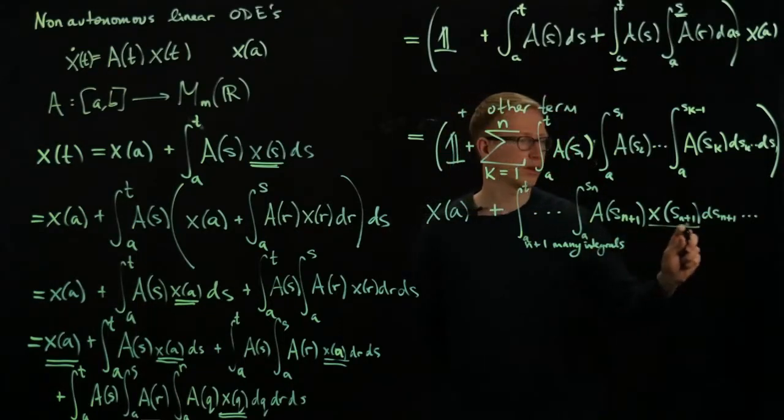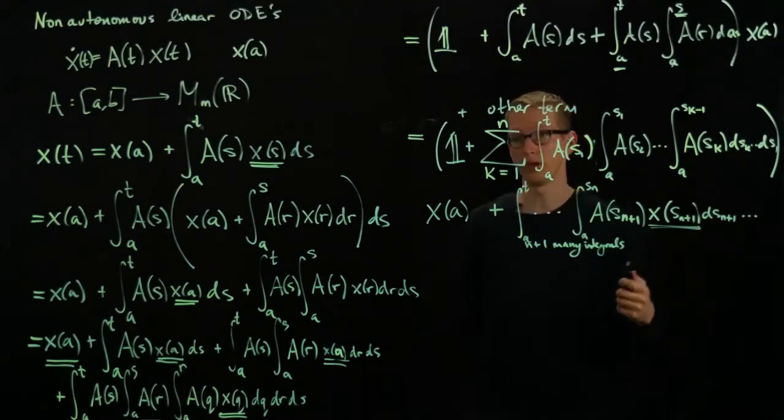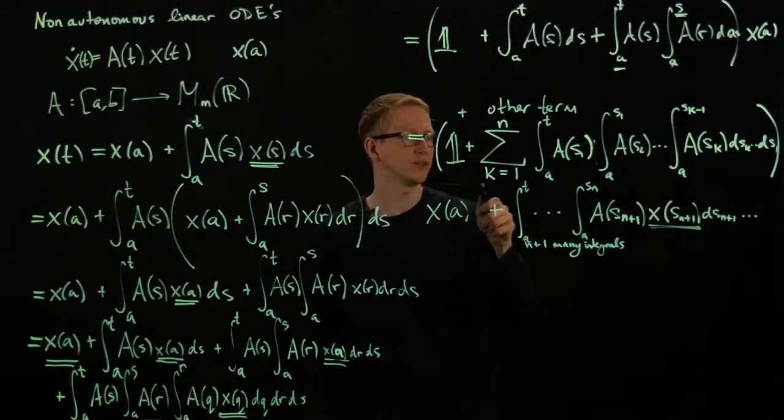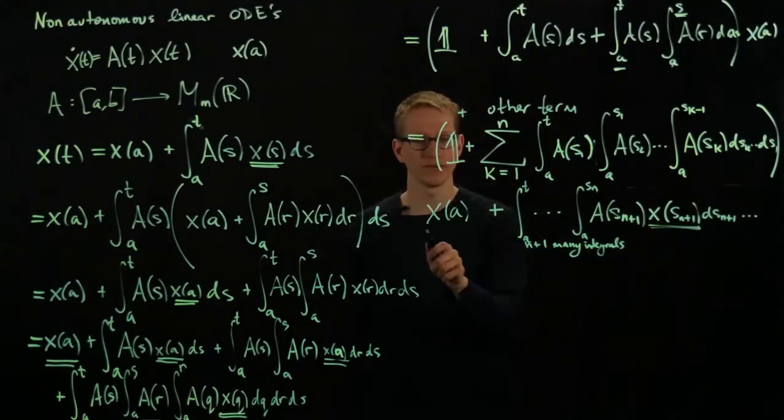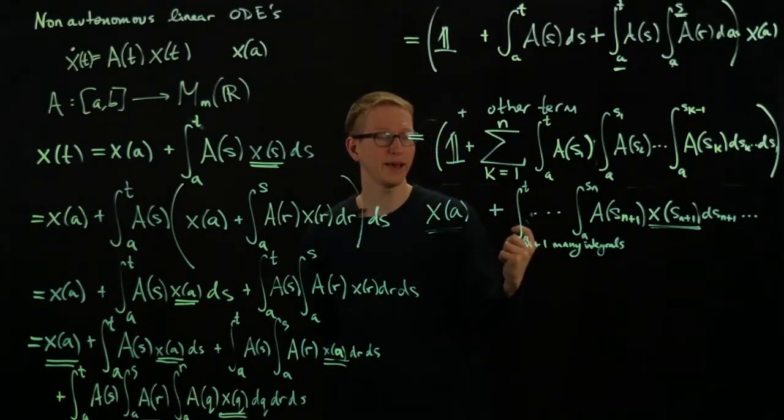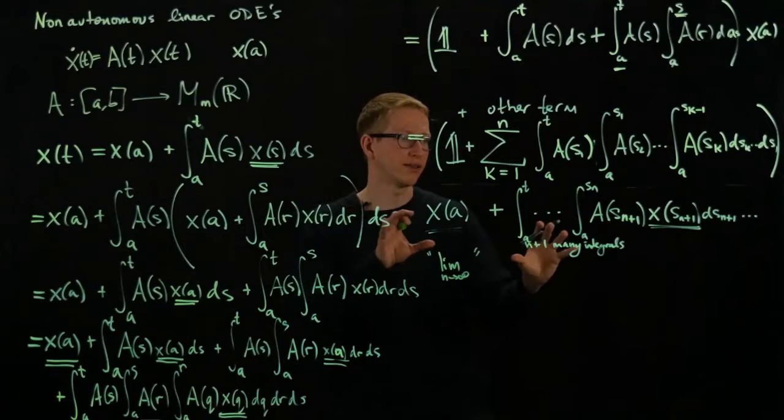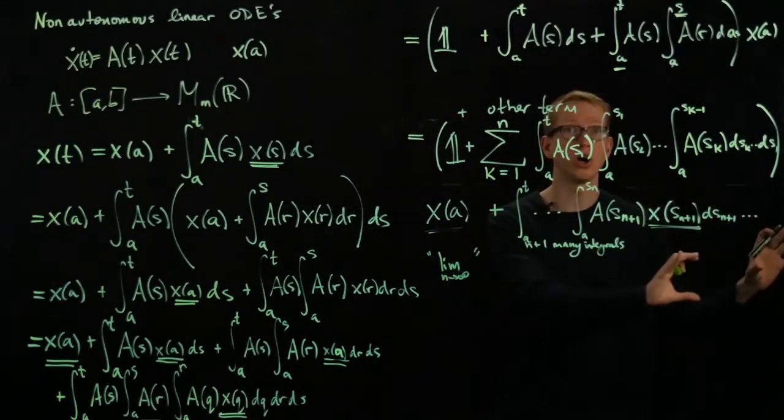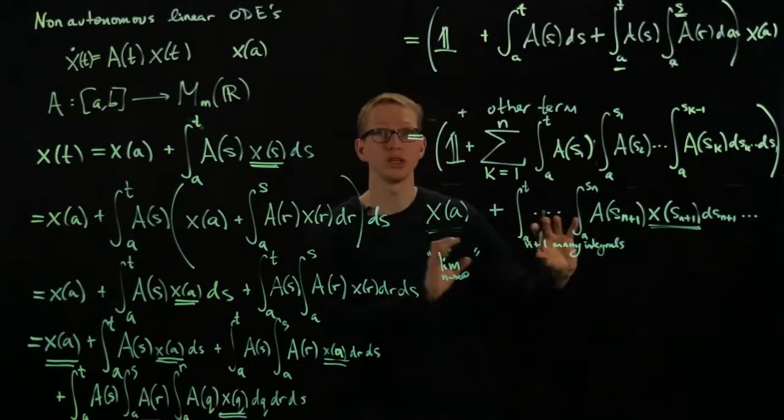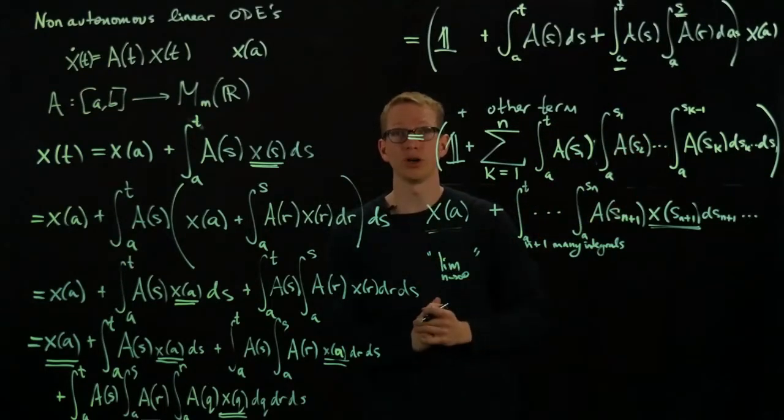So it looks something like this. And here, again, is our, the function that we want to solve for. But if you notice, all of these terms don't have that function anymore. And so what you would hope would happen is that in the limit, as n goes to infinity of this expression, that this term here gets pushed off. And we can essentially ignore it, and our solution would just be this first part.